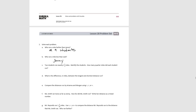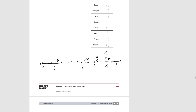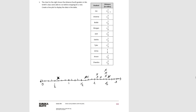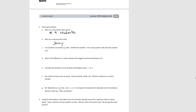It says 2 students ran exactly 2 and 1 quarter miles — identify the students. Sasha ran 2 and 1 fourth, and Anson ran 2 and 2 eighths, which is equivalent to 2 and 1 fourth. So Anson and Sasha. And how many quarters did each student run? If it's 2 and 1 fourth, we change 2 into fourths: 8 fourths plus 1 fourth equals 9 fourths.